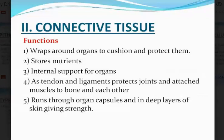Let's look at connective tissue. What are the functions of connective tissue? One, it wraps around organs to cushion and protect them. Two, it stores nutrients. Three, it provides internal support for organs. Four, as tendons and ligaments, they protect the joints and attach muscles to bone and each other. It also runs through organ capsules and in deep layers of skin, giving strength.